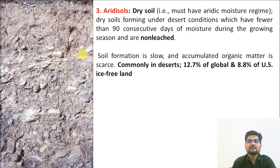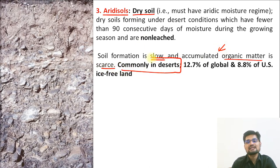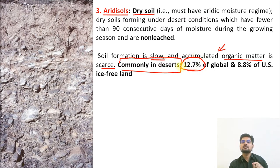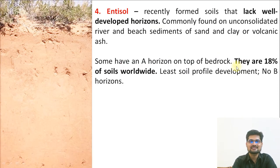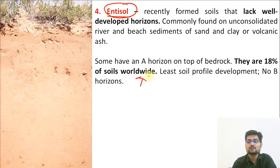The third order is Aridisol. The name itself suggests it is dry soil. It forms in areas that do not have enough moisture and accumulated organic matter is scarce, commonly found in deserts of the world. About 12.7% is found in global deserts and 8.8% in the United States. The fourth order is Entisol — recently formed soil horizons — comprising about 18% of soils worldwide.